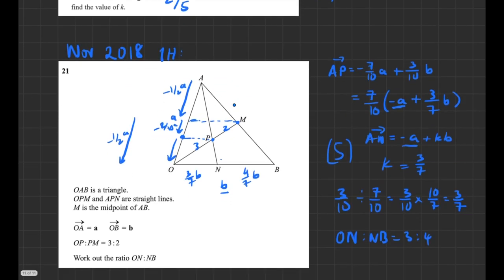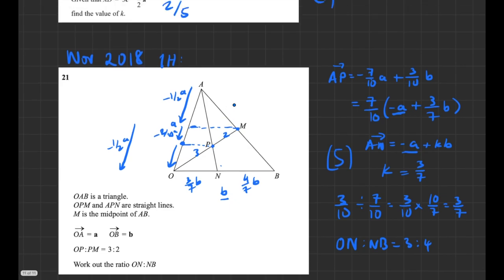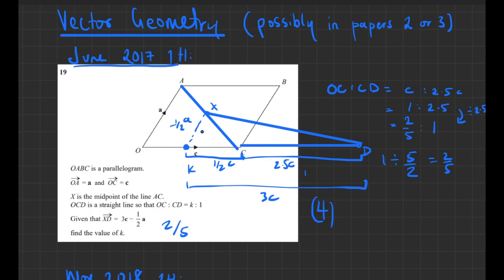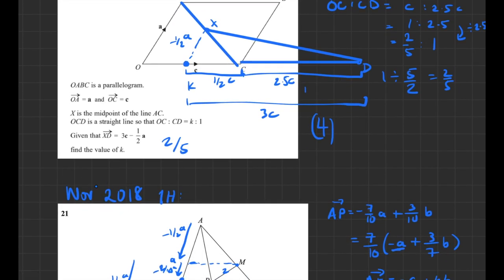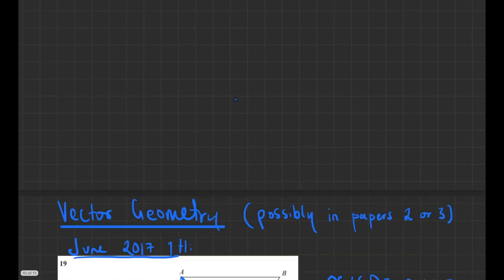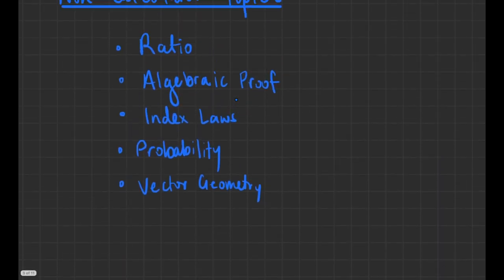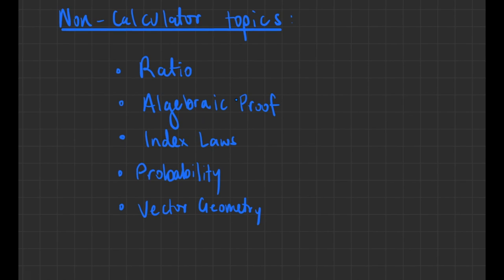There are lots of other methods to solve these vector geometry questions, and many more examples in calculator papers. I have a dedicated video on vector geometry linked in the description, along with walkthroughs of all these papers. So those are the five topics — ratio, algebraic proof, index laws, probability, and vector geometry — that are pretty much an educated guess for what will come up in the non-calculator papers. Please leave a like if you found this useful, and I'll see you in the next one!